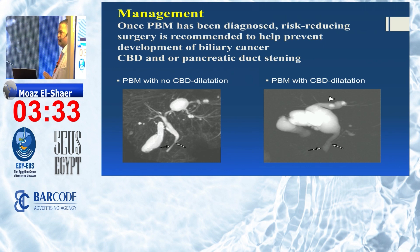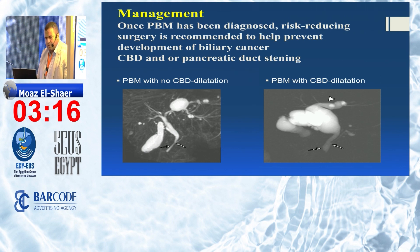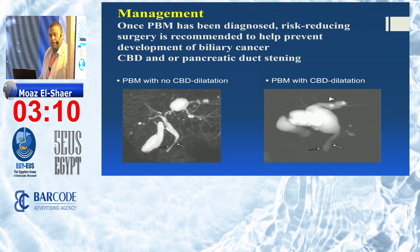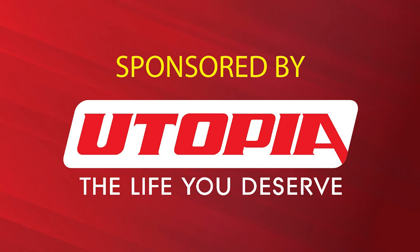After surgery, those patients still need intimate follow-up because they remain at very high risk of developing biliary cancer during their lifetime. The take-home message from this lecture: please keep in mind pancreatobiliary maljunction in patients with recurrent abdominal pain or unexplained bile duct dilatation. Thank you very much.